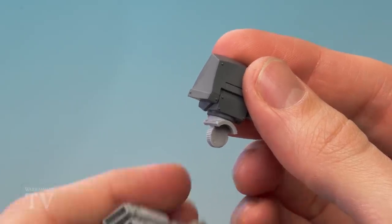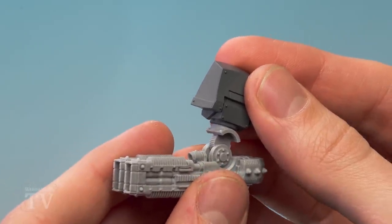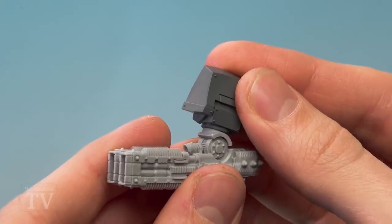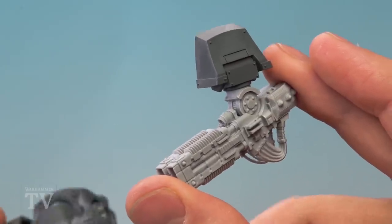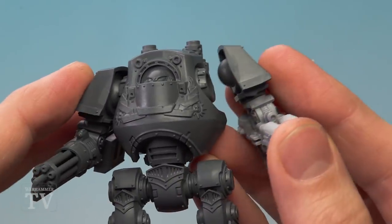With that elbow joint now glued onto the shoulder, we're ready to attach the weapon onto this joint, once again using super glue. And finally we can now glue on the completed arm assembly onto the body using plastic glue.